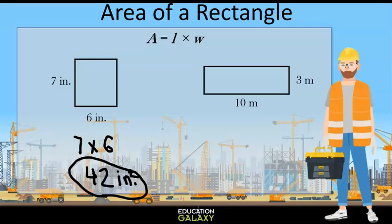The second rectangle has a length of 10 meters and a width of 3 meters. That would make the area 10 times 3 which is 30 meters squared.